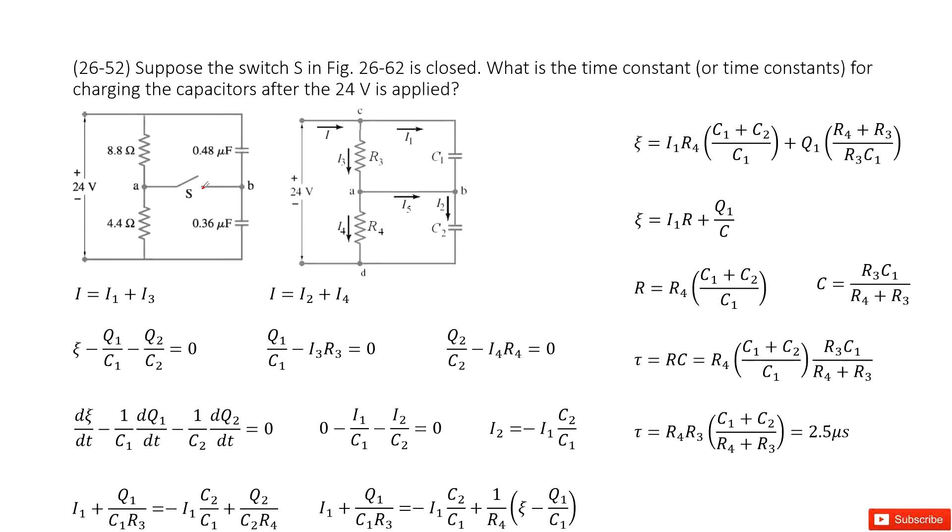The problem asks what is the time constant for charging the capacitor after 24 volts is applied. It looks like we need to find the time constant. We can see that tau equals equivalent resistance times equivalent capacitance. So it looks like we need to find equivalent resistance and capacitance.